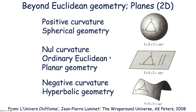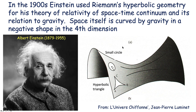On the other hand, you have a hyperbolic geometry like a saddle, where the inner angles of a triangle may be less than 180 degrees and where even parallel lines may eventually diverge. This represents a way of looking at geometry applied to the Universe. Einstein used Riemann's hyperbolic geometry for his theory of relativity of the space-time continuum and its relation to gravity. Space itself is curved by gravity in a negative shape in the fourth dimension — this is what it would look like geometrically.